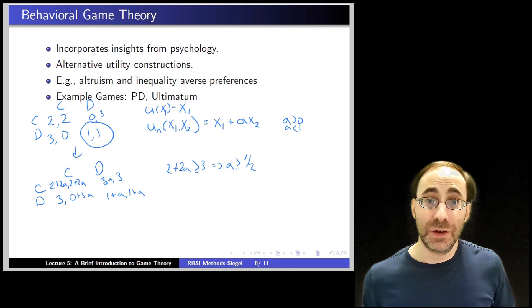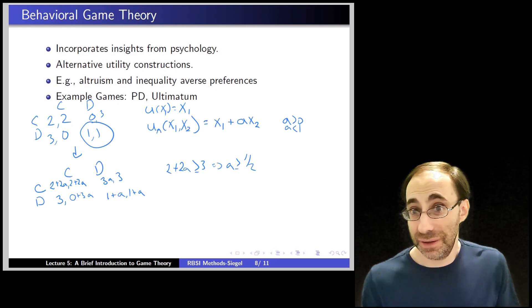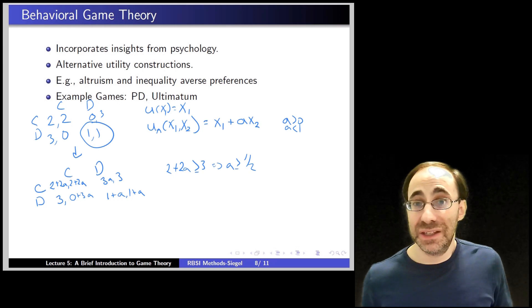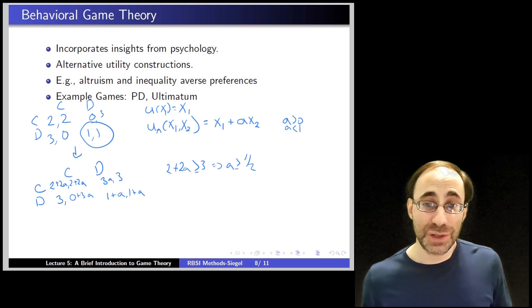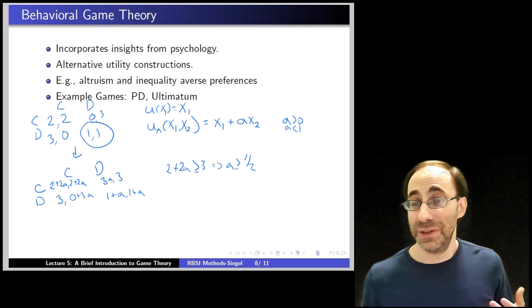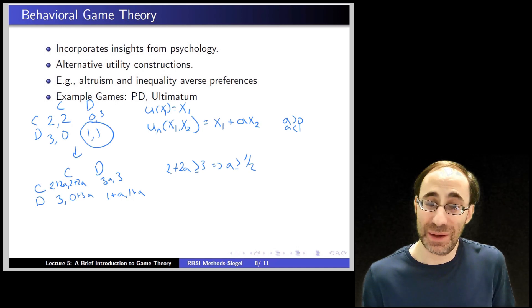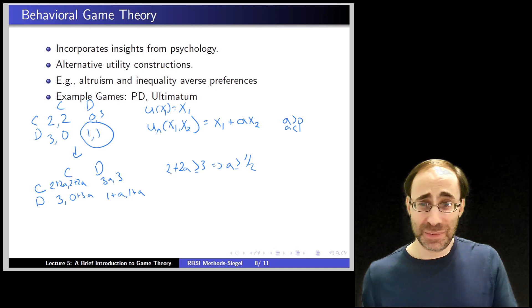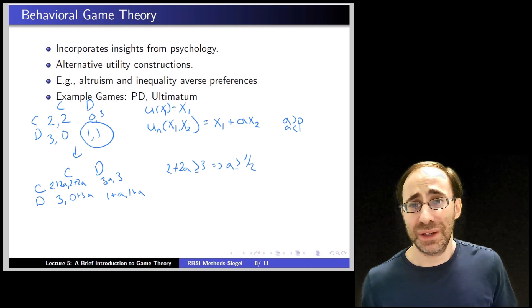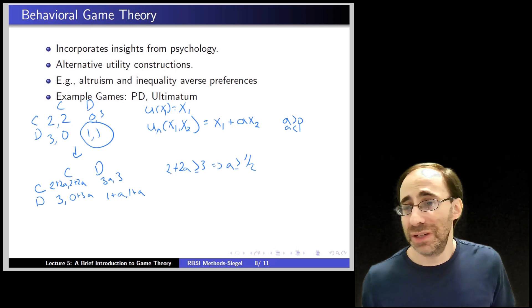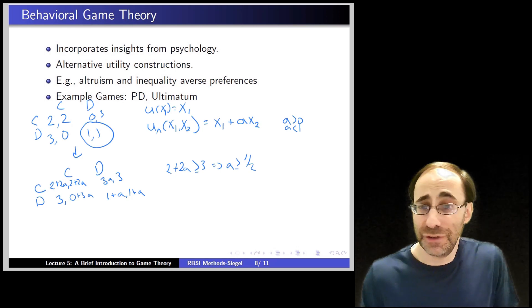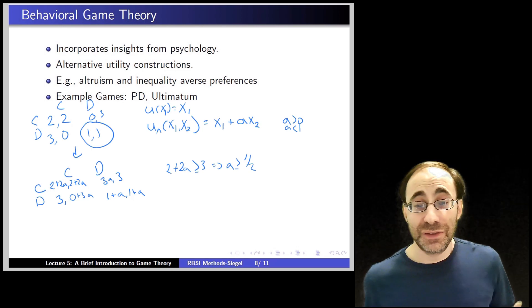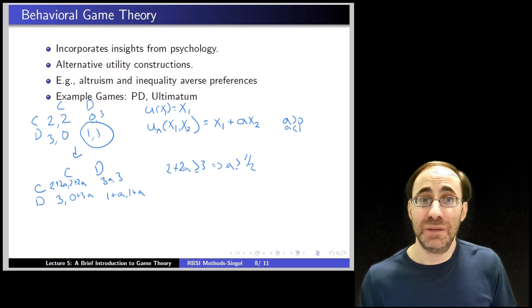Ultimatum game, we recall, the only equilibrium there was to give the other person nothing. You offer them nothing, and they say yes. As you might imagine in practice, that doesn't happen. People who get offered a very small amount don't often always say yes. They get insulted. They don't want that small amount. And second, the people who are offering, maybe realizing people say no, don't offer nothing. They offer something. Sometimes it's small, but oftentimes it's reasonably large and close to half. Even though the strict selfish utility function game theory would say you don't have to do that.